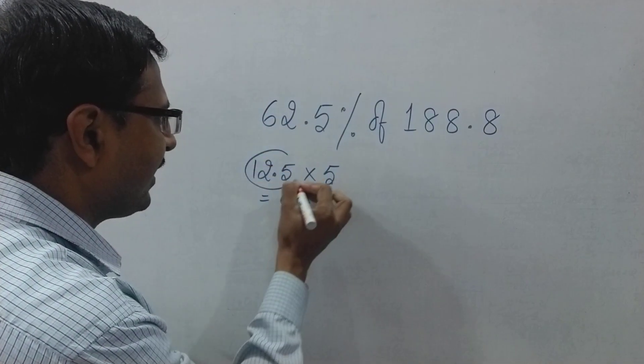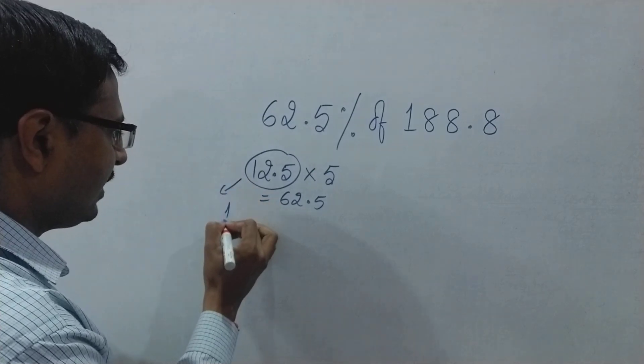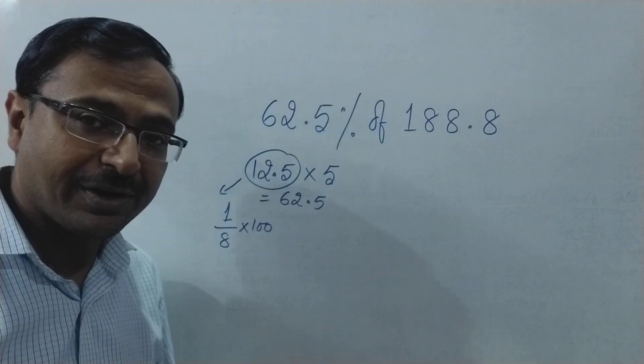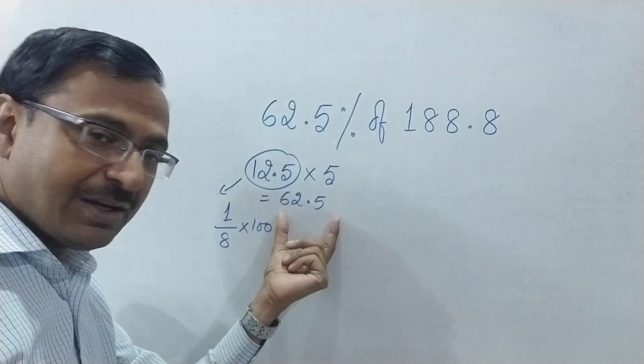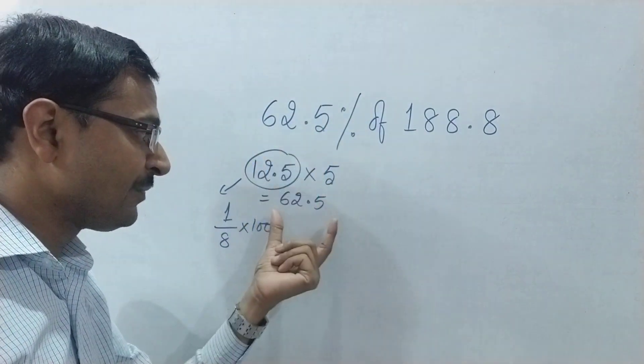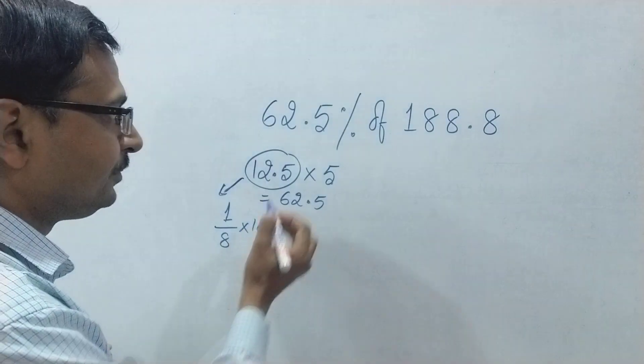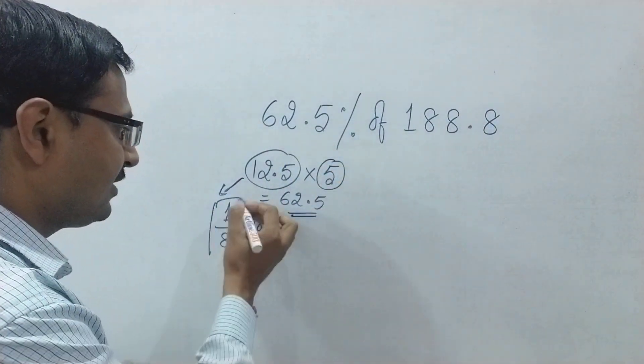And this number 12.5 is exactly 1/8th of 100. So 1/8th of 100 is 12.5, and the number given here is 62.5. So obviously, if 12.5 is 1/8th, then 62.5 will be 5 times 1/8th, which is 5/8.